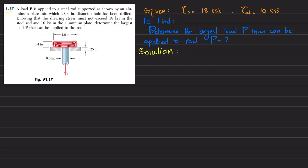You can see this is the steel rod where load P is applied, and this is the aluminum plate that is used to support this steel rod. There is a 0.6 inch hole drilled in this aluminum plate and the diameter of the upper portion of the steel rod is 1.6 inch. You have to find the load P. The allowable shearing stress for steel is 18 ksi and for aluminum it is 10 ksi. Let's start with the solution.